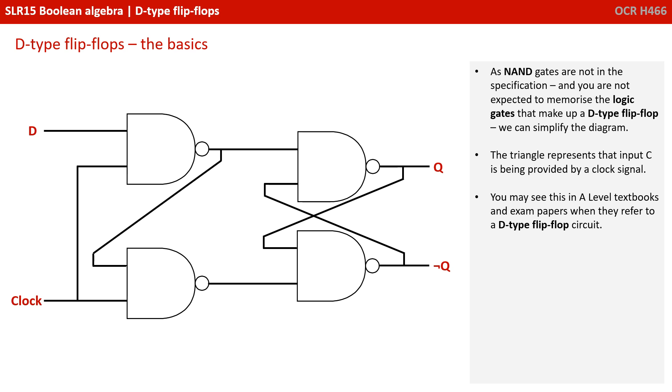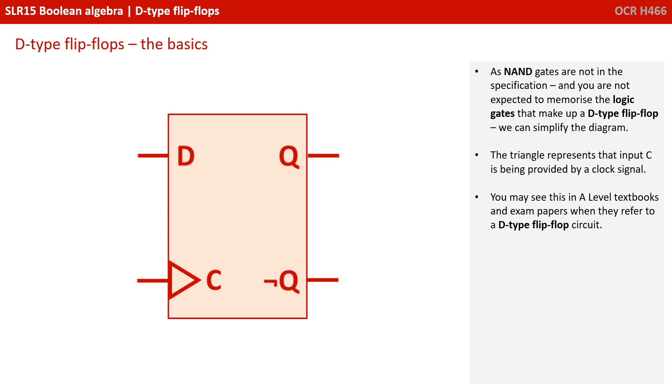As NAND gates are not in the spec and you're not expected to memorize the logic gates that make up a D-type flip-flop, we can simplify the diagram. The little triangle represents that input C is being provided by a clock signal. You may see this in A-level textbooks and exam papers when they refer to a D-type flip-flop circuit.